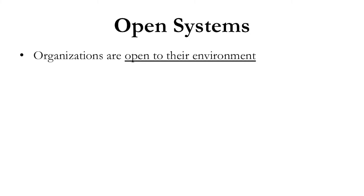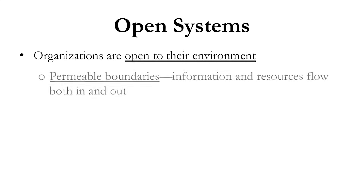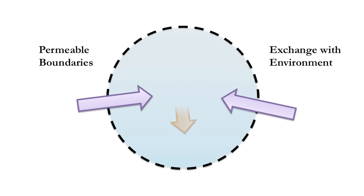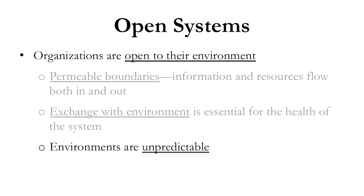Systems are clearly open — that's one of the main concepts in systems theory. They're open to their environment. When we say environment, we don't just mean things like the weather; the environment is understood more broadly. You have permeable boundaries where information and resources flow both in and out. And you have an exchange with the environment that's not just happening but is essential for the health of the system — constantly things are coming in and moving out to keep it healthy and functioning properly.